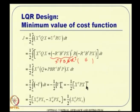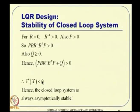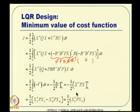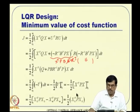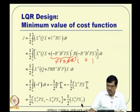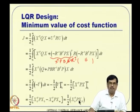Evaluating from T_0 to infinity: since the system is asymptotically stable, X(infinity) = 0, so that term vanishes. The minimum value of the cost function is simply J* = half X_0 transpose P X_0. This means knowing only the initial condition and the Riccati matrix solution, you directly have the optimal cost value, which can also be used for cross-validation of your results.